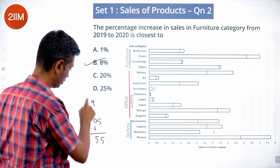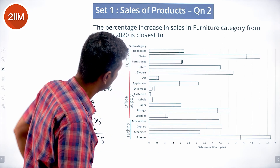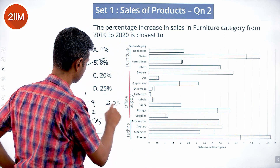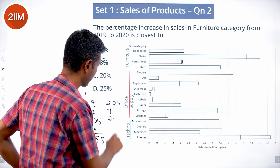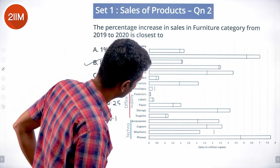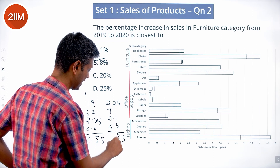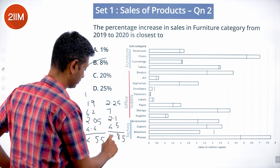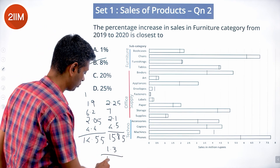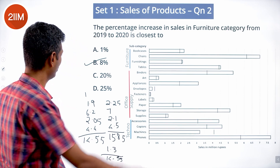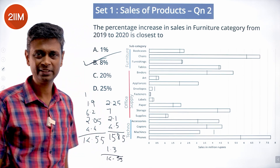The 2019 total works out to roughly 14.55. The 2020 numbers are: bookcases 2.25, chairs 6.5, furnishings 2.1, tables 4.5 — totaling about 15.85. The increase is 1.3 over 14.55, which is a little less than 10 percent. It's more than 1 percent and definitely not 20 or 25 percent, so the answer is 8 percent.